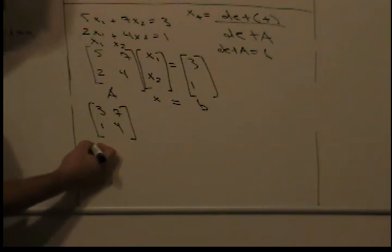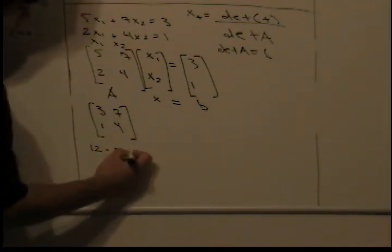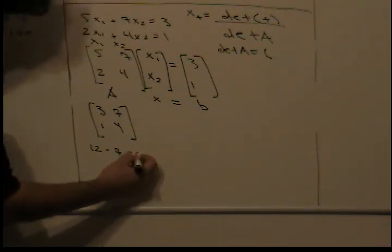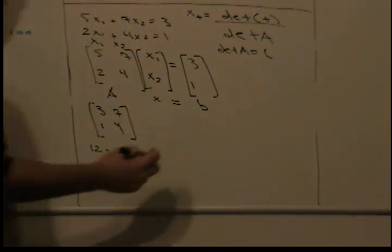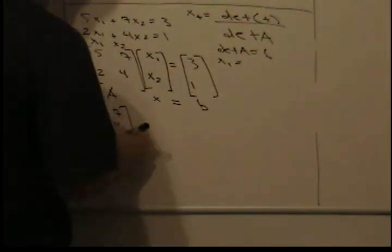This is simply 3 times 4, this is 12, minus 7, and you simply get 5. So x1 simply equals 5 over 6.